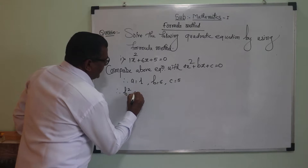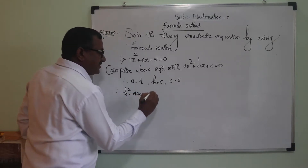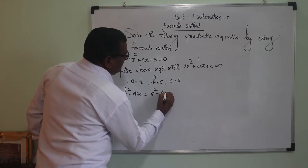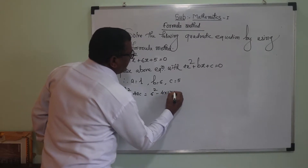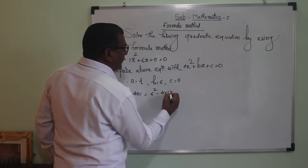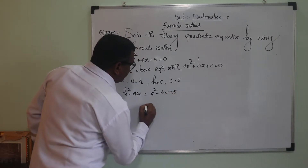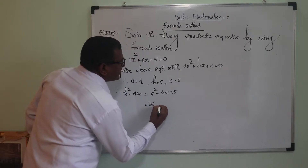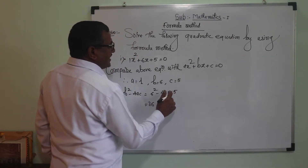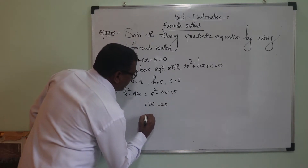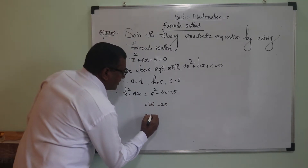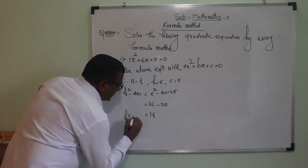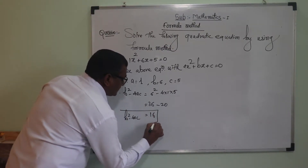Therefore, b squared minus 4ac is equal to 6 squared minus 4 into 1 into 5, which equals 36 minus 20, which equals 16. The value of b squared minus 4ac is equal to 16.